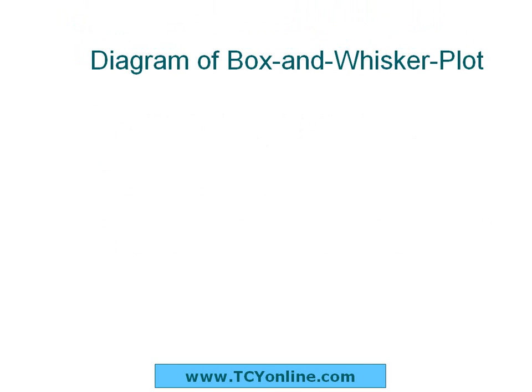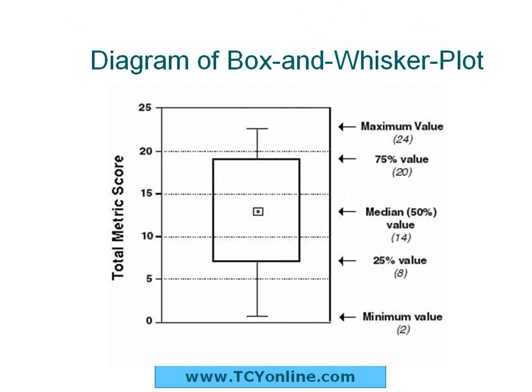This is how we represent a box and whisker plot. This box and whisker plot shows the total matrix scores. In this we can see that 24 is the maximum value, while 20 represents 75% of the value, and 14 represents the median, that is 50% of the value.